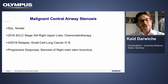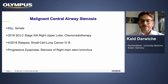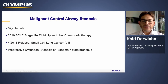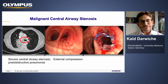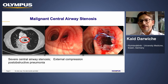The first case is an 82-year-old female patient suffering from small cell lung cancer, diagnosed in 2016 as stage 3a in the right upper lobe, treated with chemoradiotherapy. The tumor relapsed two years later locally and with distant metastasis, causing external compression of the right main stem bronchus. The patient was suffering from severe dyspnea. On the left image, the left main stem bronchus is wide open, whereas the right main bronchus is almost closed. The middle image shows external compression by the tumor.